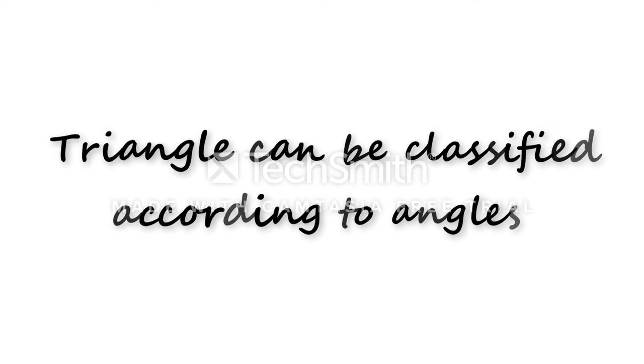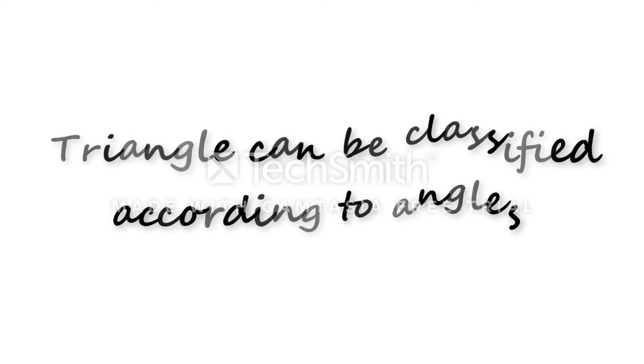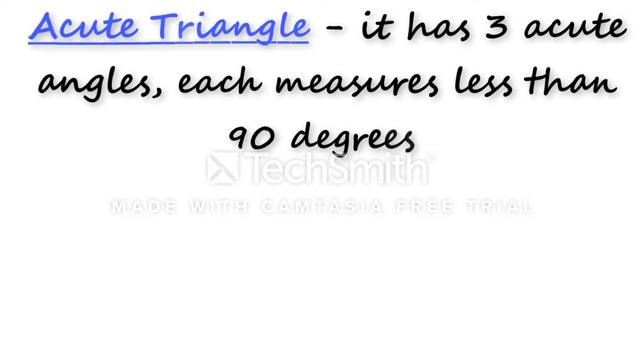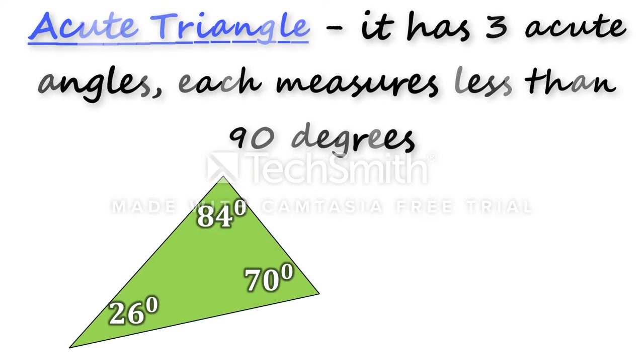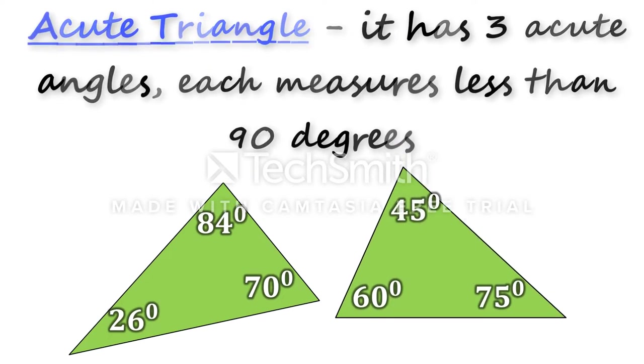Triangle can be classified according to their angles. First, acute triangle. It has three acute angles. Each measures less than 90 degrees.